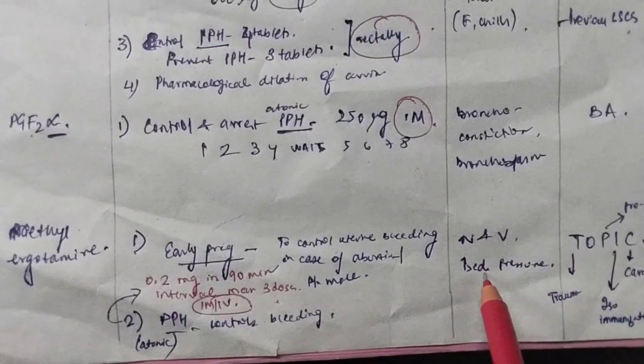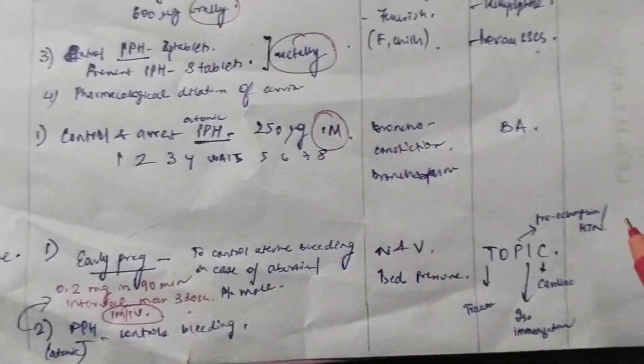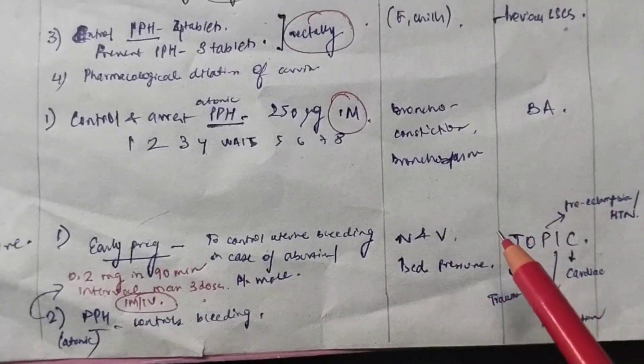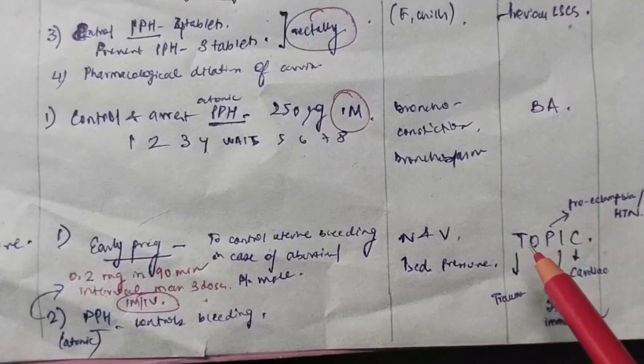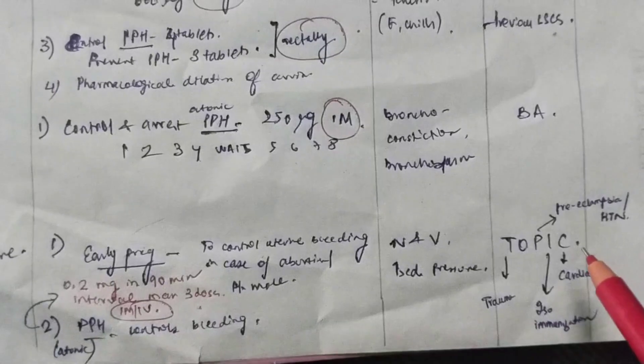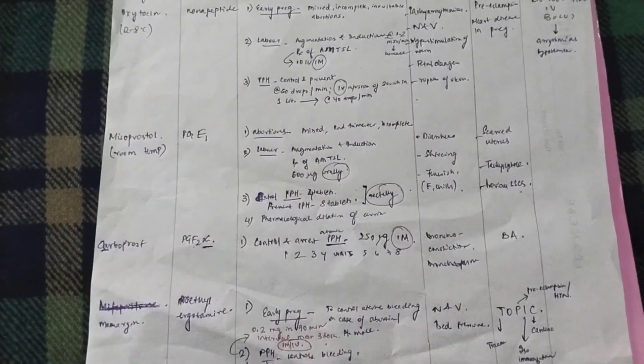Easy side effect is nausea vomiting. Now, what is important here in methergin are the contraindications of these drugs, which you can remember by the mnemonic TPIC. T is trauma. P is preeclampsia. I is isoimmunization. And C is cardiac disease. So, this is all about the drugs that are used.